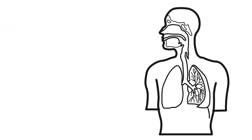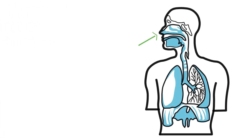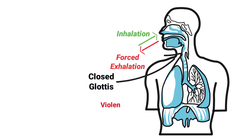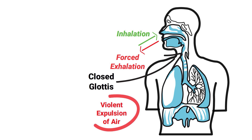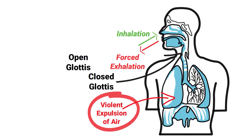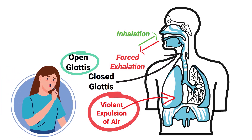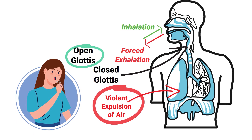A cough maneuver begins with an inhalation, followed by a forced exhalation against a closed glottis. There is then a violent expulsion of air from the lungs with an open glottis, accompanied by the distinct coughing sound that we are all accustomed to.